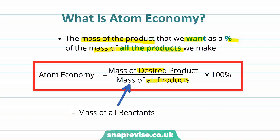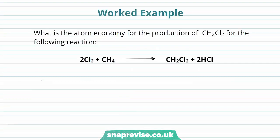So let's have a look at a worked example to gain a greater understanding of atom economy. This question asks: what is the atom economy for the production of CH₂Cl₂, dichloromethane, for the following reaction? We can see chlorine and methane are combining to form our products, dichloromethane and HCl.